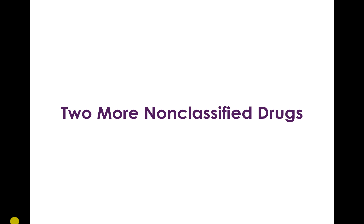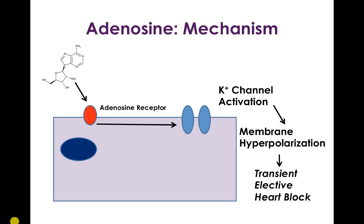There are two more non-classified drugs important in treating rhythm disturbances. The first is adenosine, a nucleoside also found in DNA and an important signaling molecule. Adenosine receptors throughout the body mediate many functions, one of which is potassium channel activation. When potassium channels are activated, the membrane becomes hyperpolarized, making it harder for an action potential to occur and harder for the cell to reach threshold. The result is a transient elective heart block, which is very useful for dissecting out supraventricular arrhythmias to identify their exact cause.